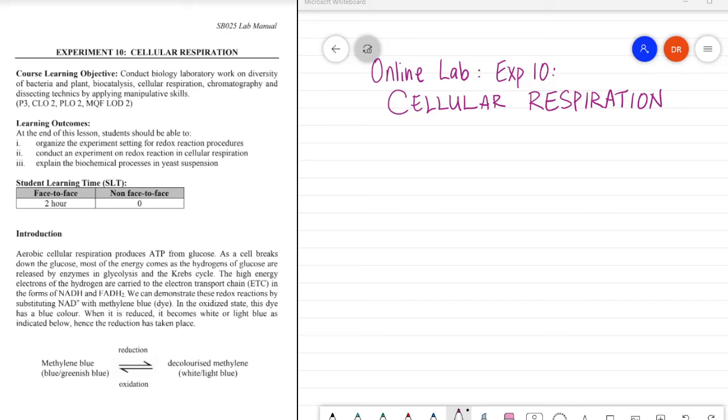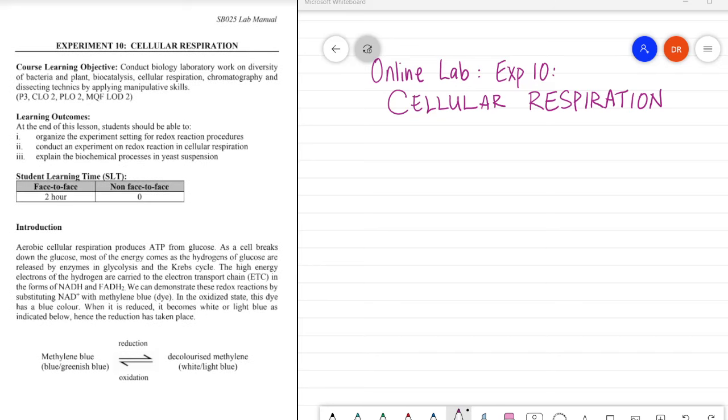Let's have a look at the introduction. Aerobic respiration produces ATP from glucose. A cell breaks down the glucose. Most of the energy comes from the hydrogens of glucose are released by enzymes in glycolysis and the Krebs cycle. The high energy electrons of the hydrogen are carried to the electron transport chain, or ETC, in the forms of NADH and FADH2. We can demonstrate these redox reactions by substituting NAD plus with methylene blue, which is a dye. In the oxidized state, this dye has a blue color. When it is reduced, it becomes white or light blue, as indicated below. Hence, the reduction has taken place. And as you see on the lab manual here, we have on the left side, methylene blue, which is a blue-greenish-blue solution. When it is undergone reduction, it will become a decolorized methylene, which is white or light blue, and when it is oxidized, it goes back into a blue or greenish color.